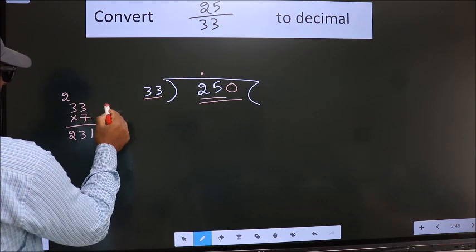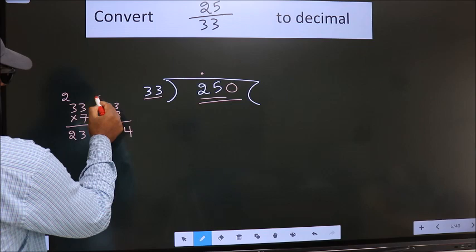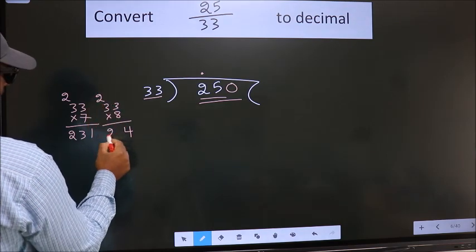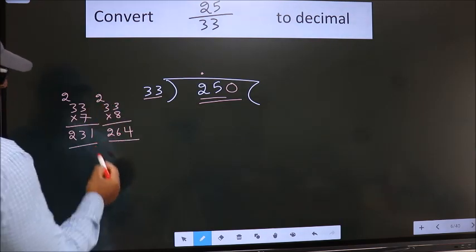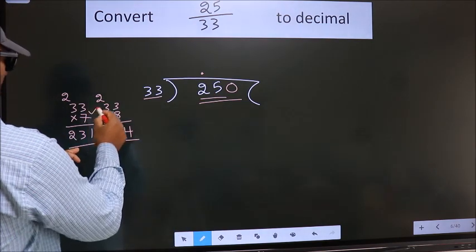What if we take 8? 8 times 3 is 24, 8 times 3 is 24 plus 2 is 26. This is exceeding 250, so we have to go with 7.